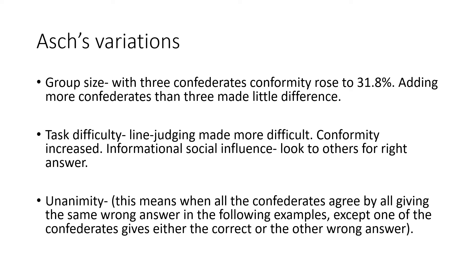The key number for group size is three. For task difficulty: this was made harder by ensuring the lines were more or less the same length, and conformity increased because of informational social influence — where you look to others for the right answer because you want to be correct. Therefore conformity increased in that case.